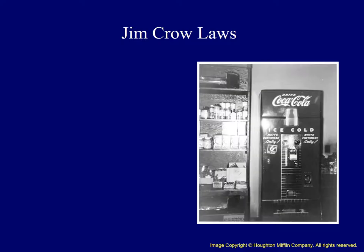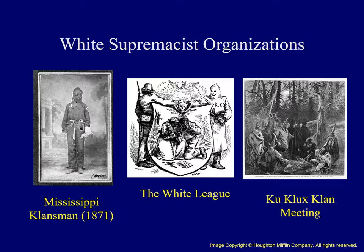That separate but equal ruling allowed local communities to pass their own segregation laws. These were called Jim Crow laws, and they established legalized segregation all over the United States — whether in the south, the north, the west, or the east. Just about everything was segregated: hospitals, theaters, courtrooms, schools, cemeteries, and many other things. On the right, we see an image of a Coca-Cola dispenser from a little bit later in the 20th century, encouraging people to purchase their product — however, white customers only.